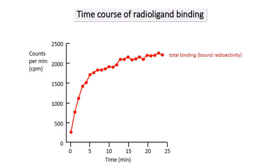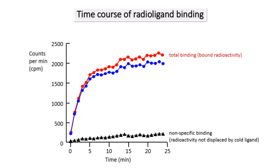So we can repeat the binding experiment, this time in the presence of an excess of cold ligand to displace the specific binding of the hot ligand. In these conditions, the amount of radioactivity measured from the tissue at each time point represents the non-specific binding and is low in comparison to the total binding. The specific binding, or binding to the receptor, can then be calculated by subtracting the non-specific binding at each time point from the total binding.